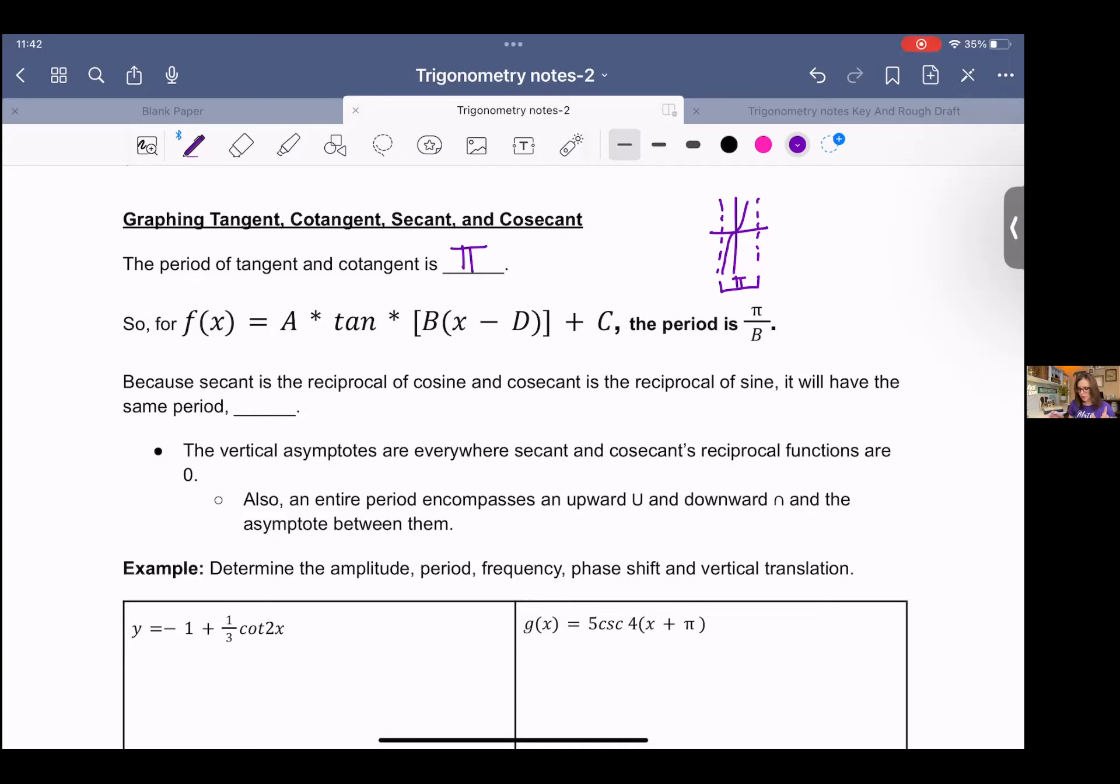And then the period for cosecant and secant, since they're related to cosine and sine, they're going to have that same period of 2 pi.